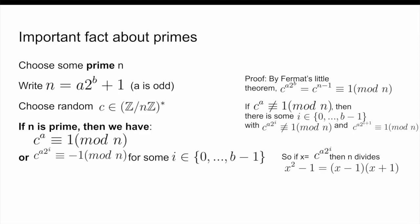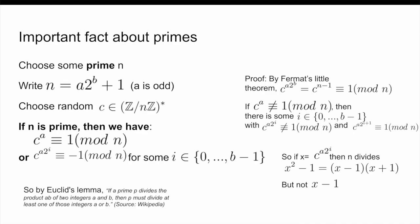However, since X = C^(A·2^i) is not congruent to 1 modulo N, N does not divide X − 1. So therefore, by Euclid's lemma — which states that if a prime P divides the product AB of two integers A and B, then P must divide at least one of A or B — we get that N must divide X + 1. And what this means is that C^(A·2^i) is congruent to negative 1 modulo N, and so we are done.